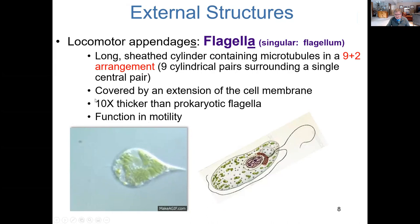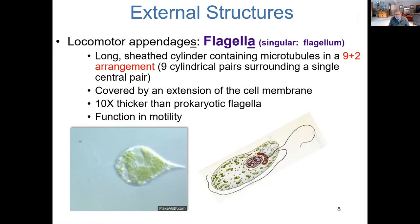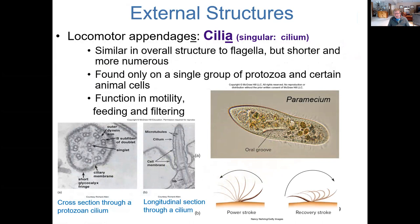Functionally, the eukaryotic flagellum performs the same thing as in a prokaryotic cell — helping the cell move through its environment. Cilia (plural; cilium is singular) is another external feature that some eukaryotic cells possess. This is not always helping the cell swim like the flagellum; it depends on the cell.